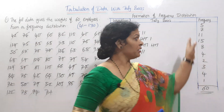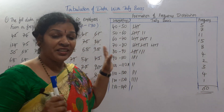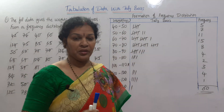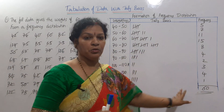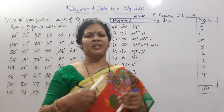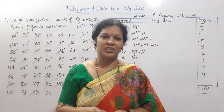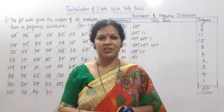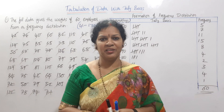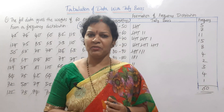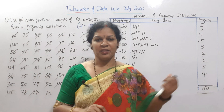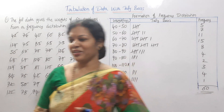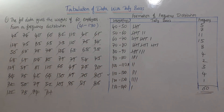This frequency table is the base. We now have the frequency distribution ready — the weight frequencies are: 5, 8, and so on. This is the basic raw information. If you have any statistical tools you want to apply, you can use this frequency table as the base.